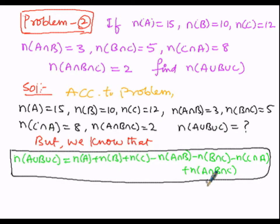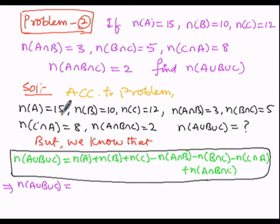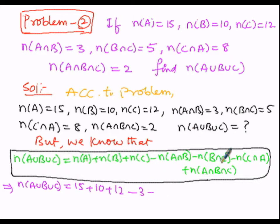Substituting the known values: N of A union B union C equals 15 plus 10 plus 12 minus 3 minus 5 minus 8 plus 2.